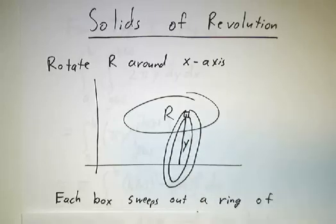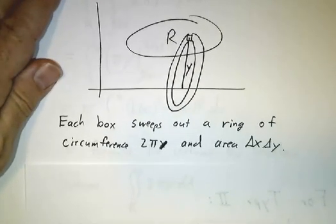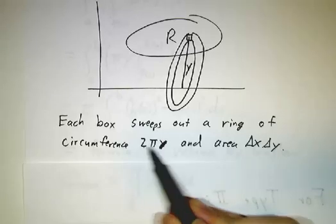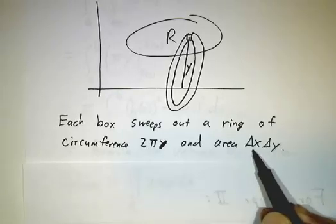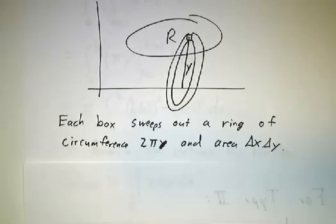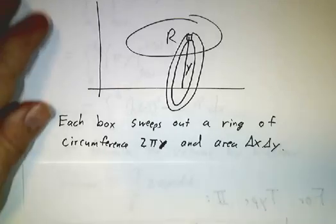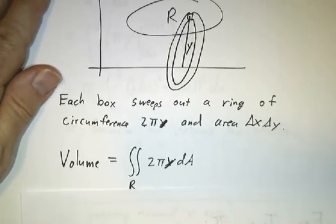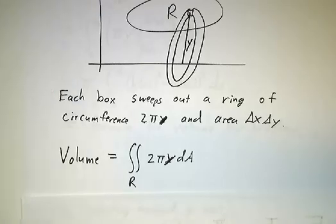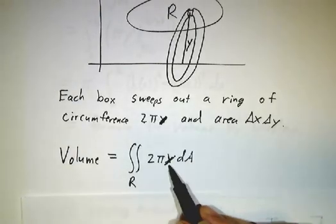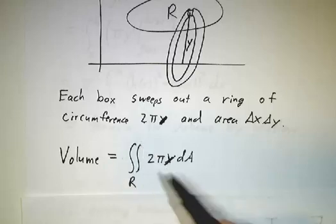And how far it goes around is it's a circle of radius y. So the box sweeps out a ring of circumference 2πy and cross-sectional area Δx Δy. And so the volume of our solid of revolution is going to be the integral of 2πy dA over our region.